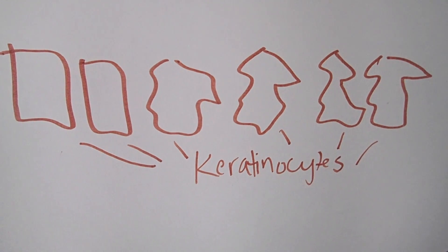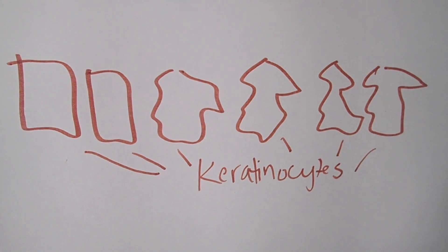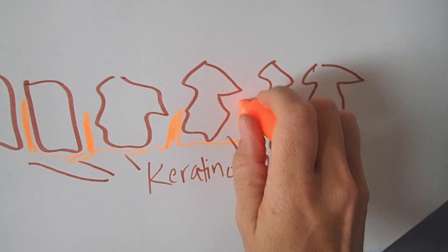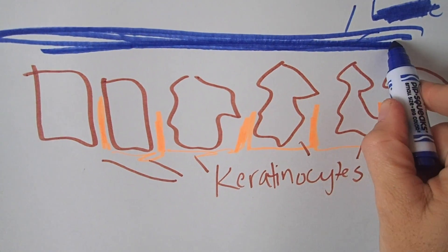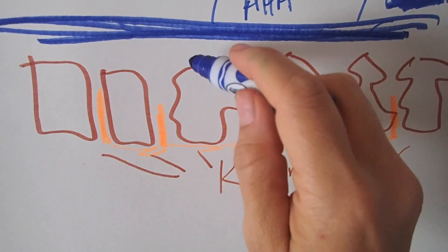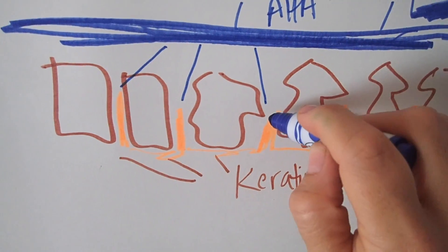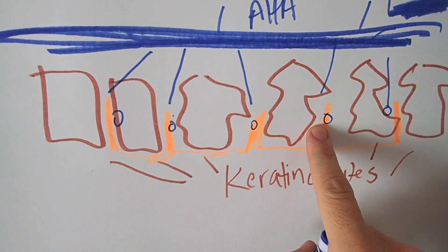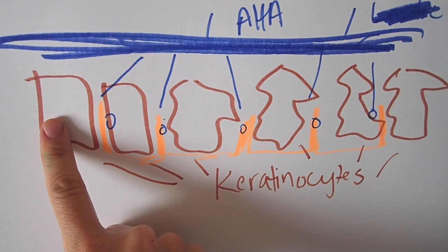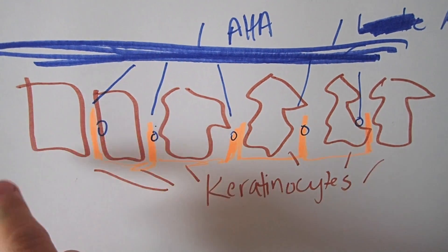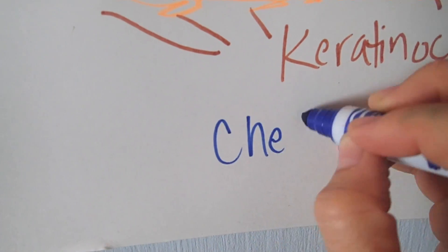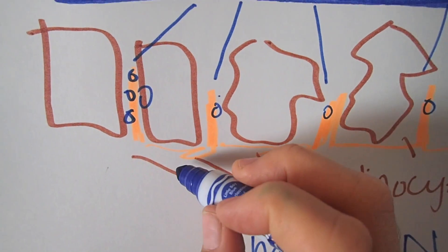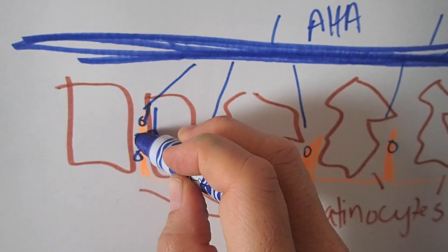Here is the most widely accepted theory. Here are our dead keratinocytes. In between these cells is a lipid-rich secretion that keeps our skin waterproof and keeps these cells bonded together. The most widely accepted theory is that when you layer AHAs on your skin, they come in and pull calcium out of these cell adhesions, causing the bonds to break and thereby releasing the keratinocytes — letting them basically fall off the face. They do this through a process called chelation. Calcium ions are considered metal ions, and AHAs are an organic compound — that's what allows them to pull the calcium out.